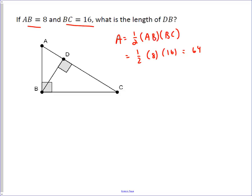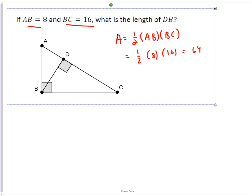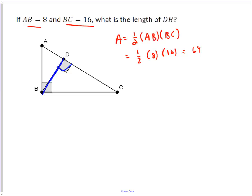However, another way to calculate the area of this triangle is to think about this picture and realize that this right angle means that BD is an altitude.